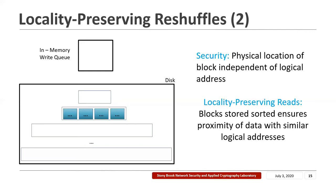Storing blocks sorted on their logical addresses has another benefit: we are able to ensure locality-preserving reads when SQORAM is paired with a locality-optimized file system. A locality-optimized file system usually assigns similar logical addresses to logically-related items, such as file blocks. Since blocks are stored sorted on their logical addresses, logically-related blocks end up in close proximity to each other on disk. Therefore, when logically-related items are read together in a sequential chunk, such as a file, this access can be performed with the minimum number of disk seeks.